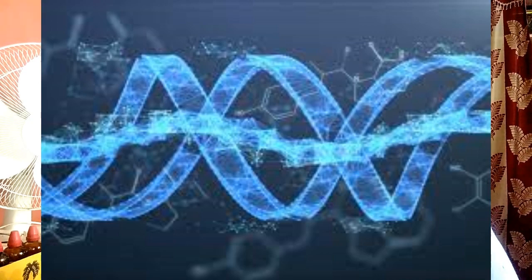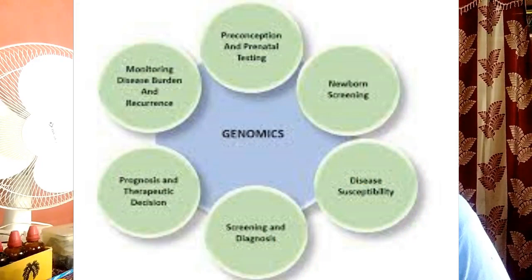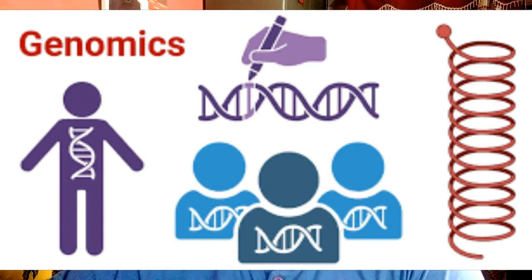What is genomics and its types? Types of genomics: structural genomics aims to determine the structure of every protein encoded by the genome; functional genomics aims to collect and use data from sequencing for describing gene and protein functions; comparative genomics aims to compare genomic features between different species.